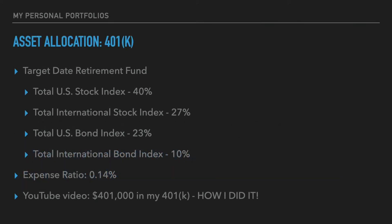I participate in my firm's 401k plan and direct 100% of my contributions to one fund — a target date retirement fund. This fund is actually a fund of funds. It has exposure to four different broad-based mutual funds, all of which are index funds. I have a 40% allocation to a total U.S. stock index fund, a 27% allocation to a total international stock index fund, a 23% allocation to a total U.S. bond index fund, and a 10% allocation to a total international bond index fund. The expense ratio of this portfolio is 14 basis points.